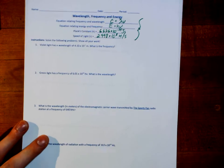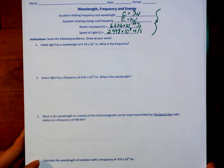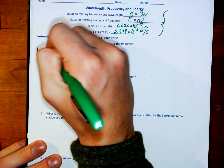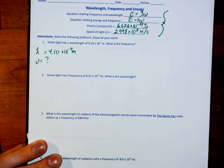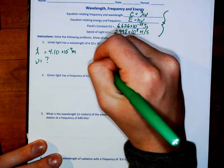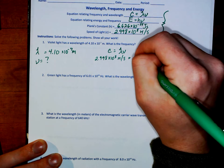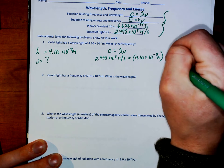Number one: violet light has a wavelength of 4.1 times 10 to the negative 7th meters. What is the frequency? I am given my wavelength of 4.10 times 10 to the negative 7th meters and they're asking me for the frequency. So I need an equation that relates those two things — C equals lambda nu. I'm going to substitute in what I know: 2.998 times 10 to the eighth meters per second is equal to that wavelength, 4.10 times 10 to the negative 7th meters, multiplied by the frequency.